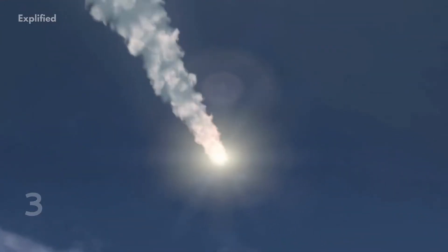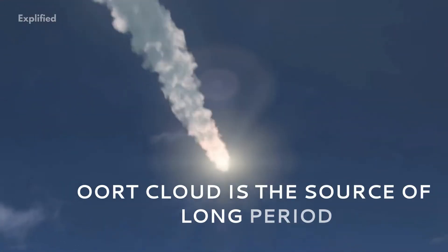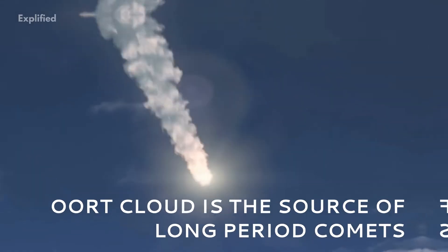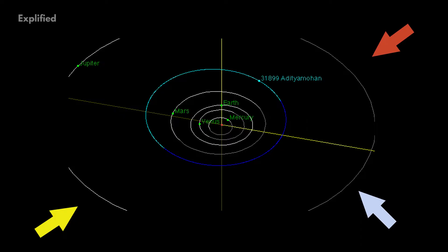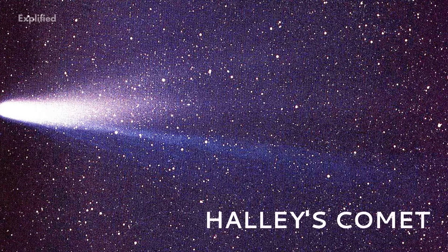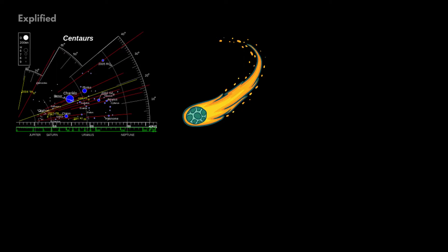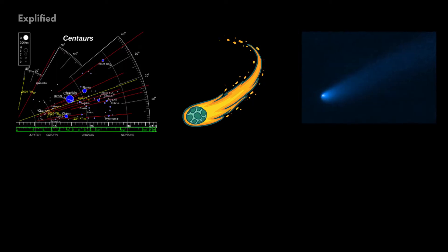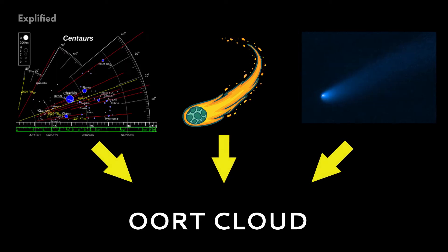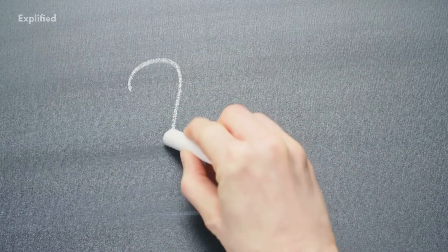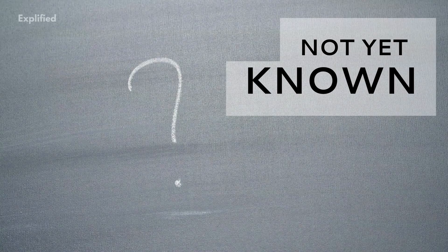Number 3. Oort cloud is the source of long-period comets. Astronomers have used the observed orbits of long-period comets, such as Halley's comet as the basis for the notion that all long-period comets, as well as Centaurs, and Jupiter family comets have their origin in the Oort cloud, despite the fact that the origin of the Oort cloud is not yet known and defined.